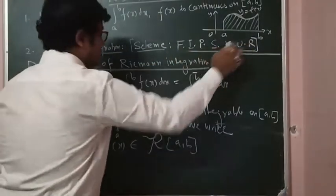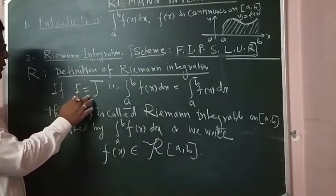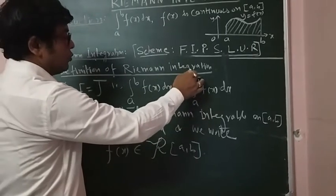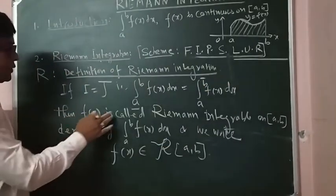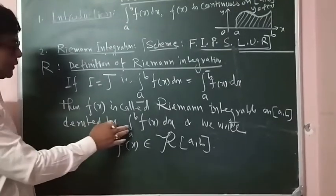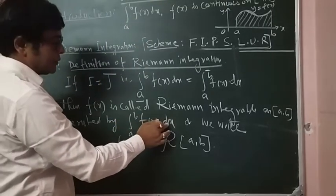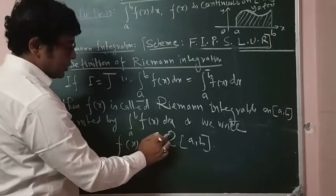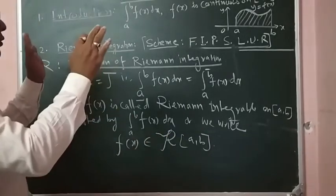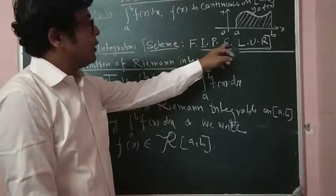Finally, we define R — R I am denoting as the definition of Riemann integration. If i = j, that is, integration A to B (lower bar) F(x) dx equals integration A to B (upper bar) F(x) dx, then F(x) is called Riemann integrable on [A, B], or simply integrable on [A, B]. And this integration is denoted by our usual notation integration A to B F(x) dx, or we write F(x) belongs to script R([A, B]), i.e., F is a Riemann integrable function.